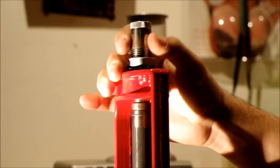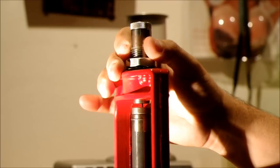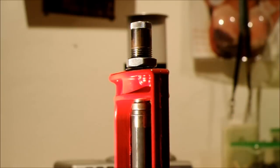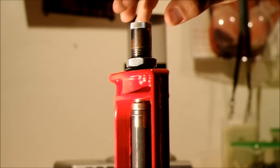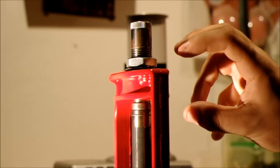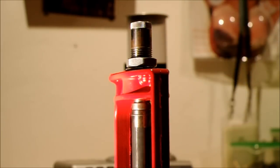With a full length sizing die, you install it just barely touching the shell plate. These dies are different - they work by crushing the neck of the case into a bushing which sizes them.